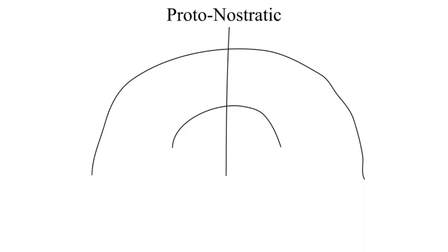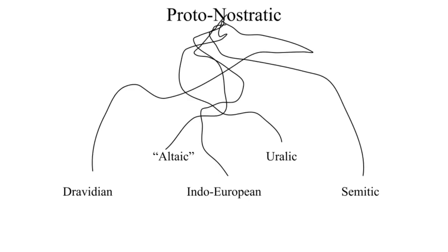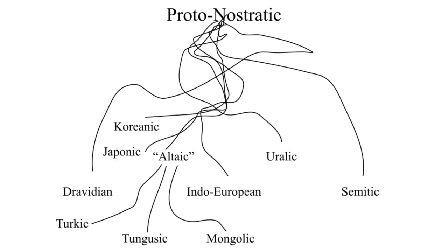Anyway, Proto-Nostratic is basically what you get if you combine every language that we just talked about in all of these videos except Sino-Tibetan, and by that I think you know I mean it's just nonsense. Also, in addition to the Indo-European, Uralic, Semitic, Dravidian, and the three Altaic languages, it also has the whole macro-Altaic group, which includes Korean and Japanese, and also Carvelian, which is basically just Georgian.